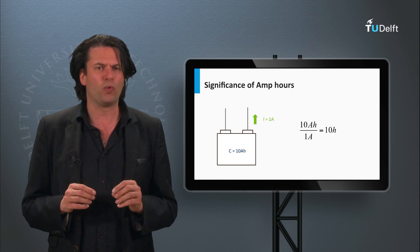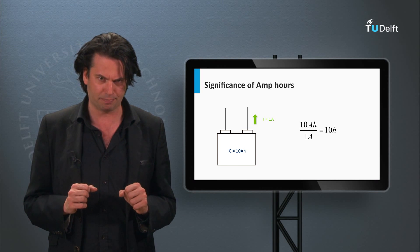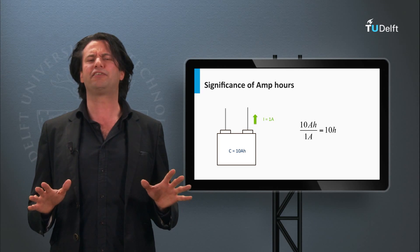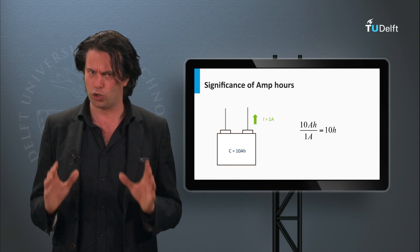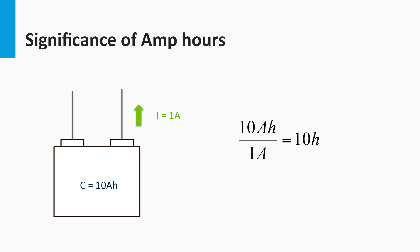You must be wondering what is the significance of amp-hours as the unit of battery capacity. The unit itself gives us some important clues about the battery properties. If we take a brand new battery with a 10 amp-hour capacity, it can theoretically deliver a 1 amp current for 10 hours at room temperature. Of course, in practice this is seldom the case due to several factors, as we will see later.